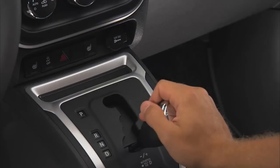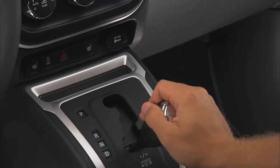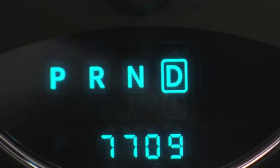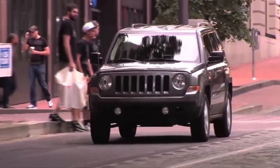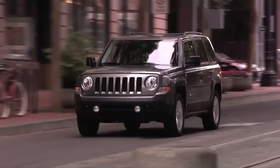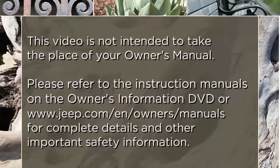You'll also notice that transmission shifting will be more pronounced when AutoStick is engaged. To disengage AutoStick mode, hold the shift lever to the right until D is once again displayed in the instrument cluster. You can shift in or out of AutoStick mode at any time without taking your foot off the accelerator pedal. Please refer to the instruction manuals on the Owner's Information DVD or jeep.com/en/owners/manuals for complete details and other important safety information.